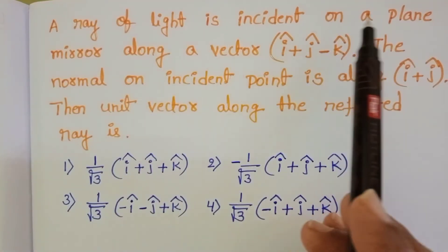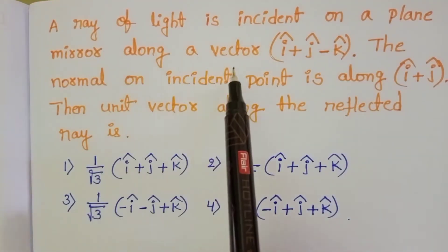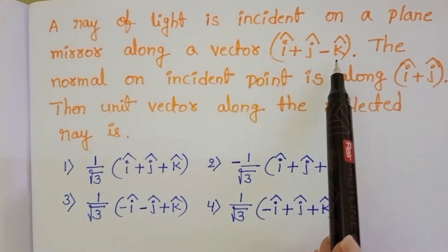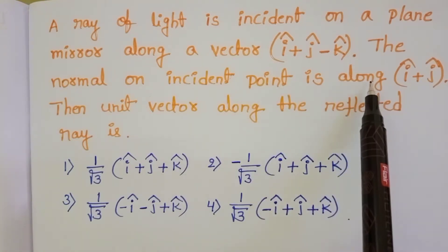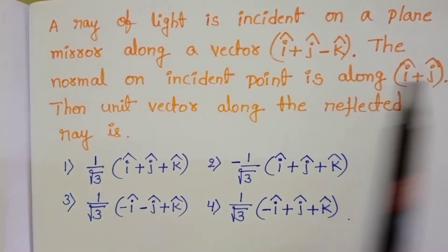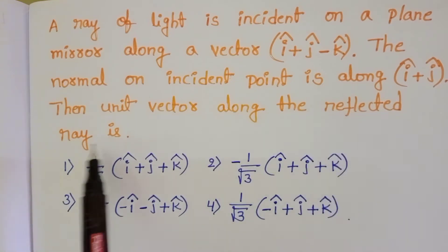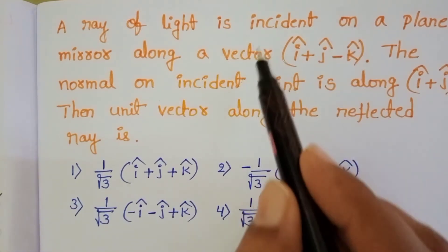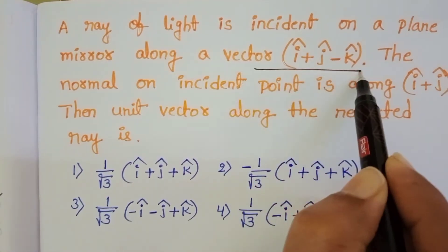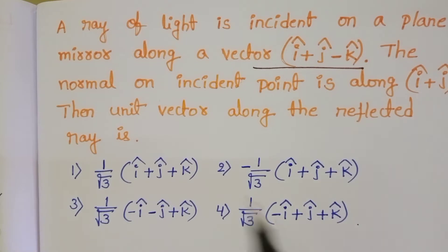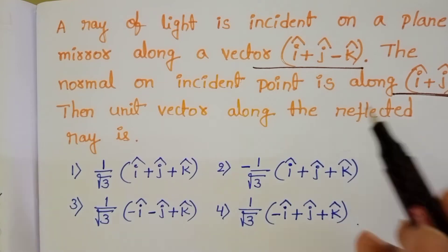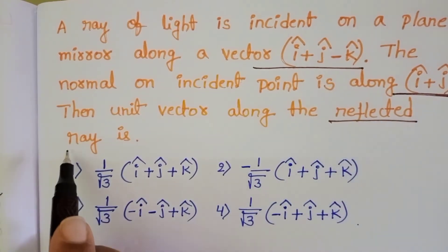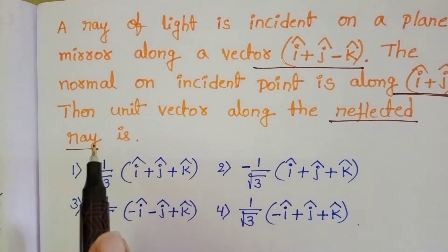A ray of light is incident on a plane mirror along a vector î + ĵ - k̂. The normal on the incident point is along î + ĵ. We want to find the unit vector along the reflected ray.